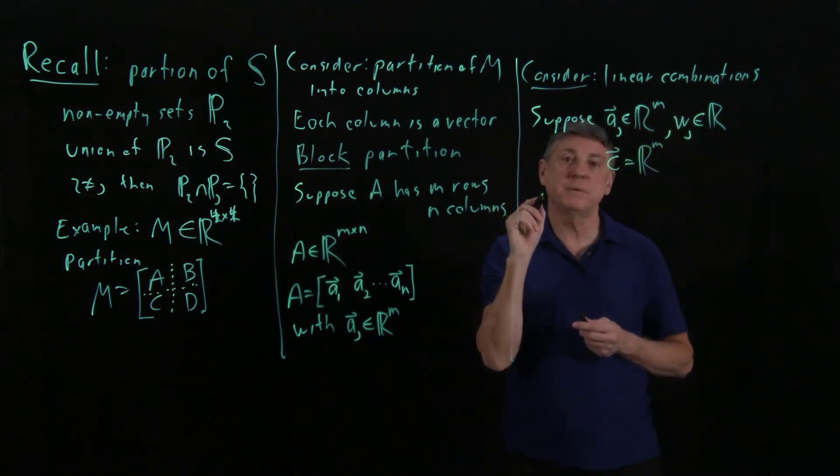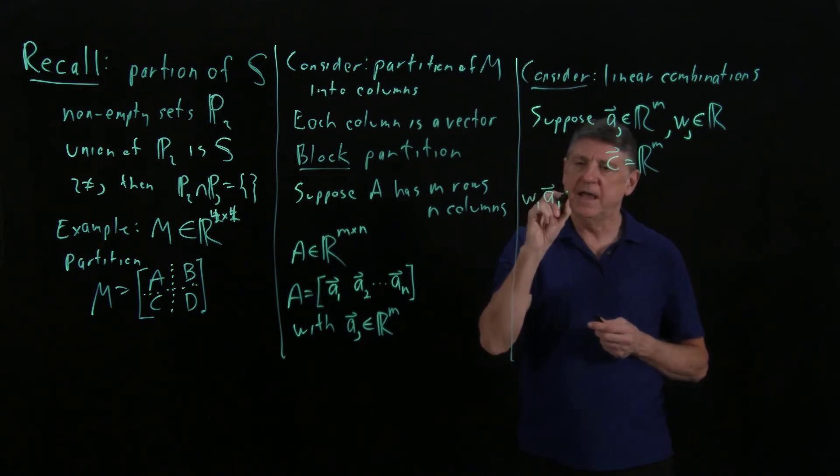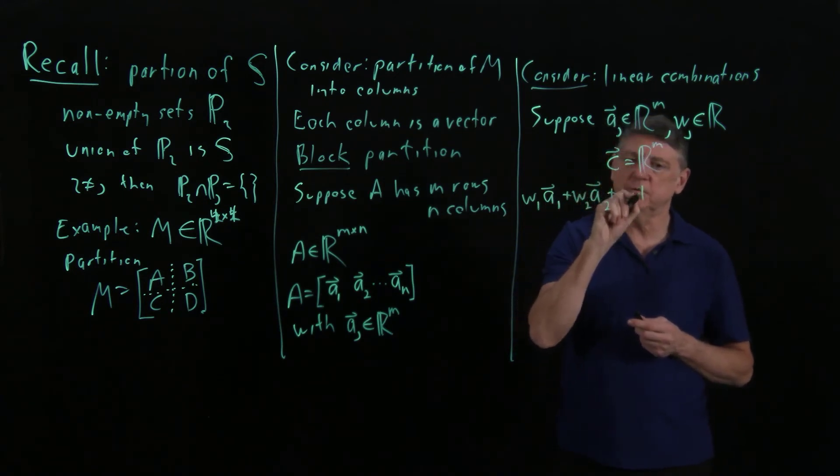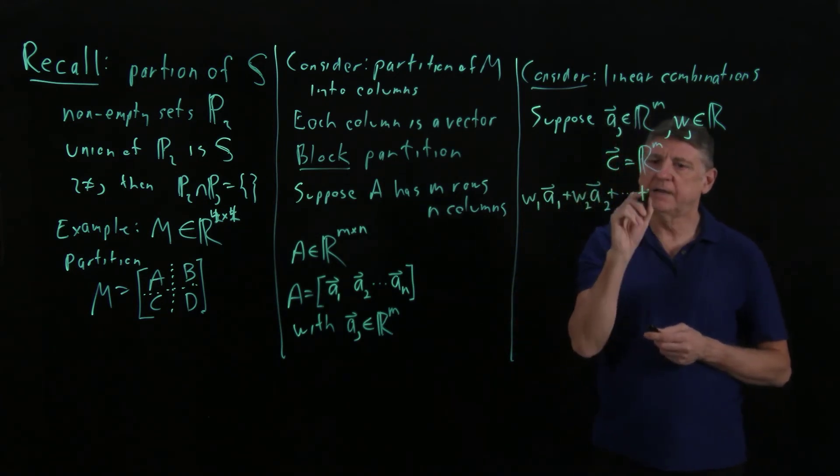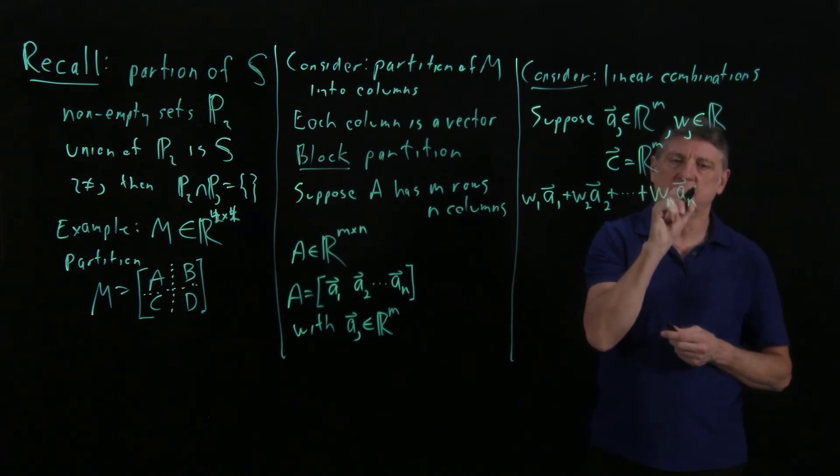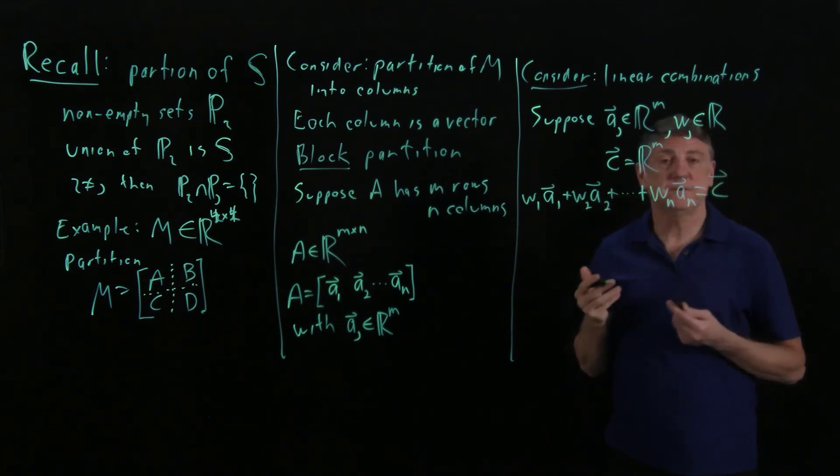Well, the linear combination is I could take vector one and I could multiply it by scalar one, and then I could add vector two multiplied by scalar two, and I could continue. We finish up with the final one, and I could say that's the vector c. And this is a linear combination, which is a fundamental idea in linear algebra.